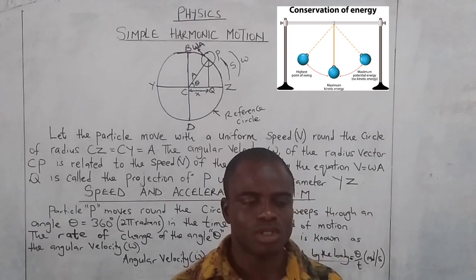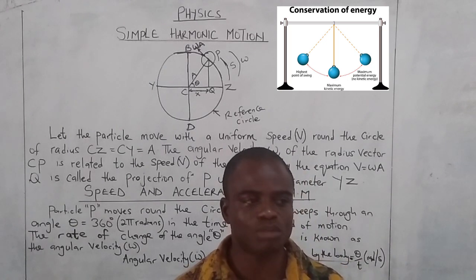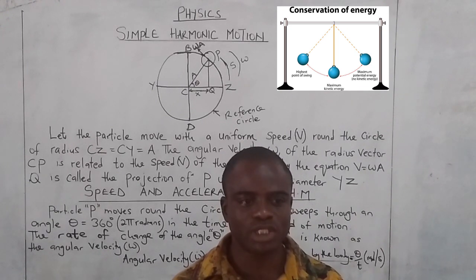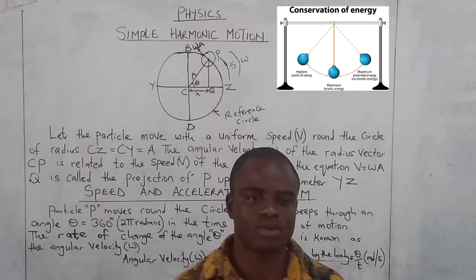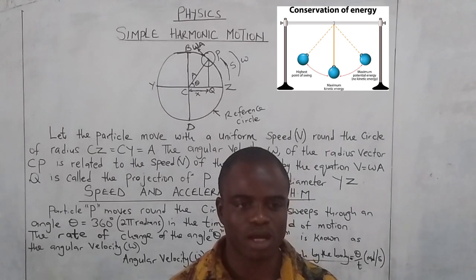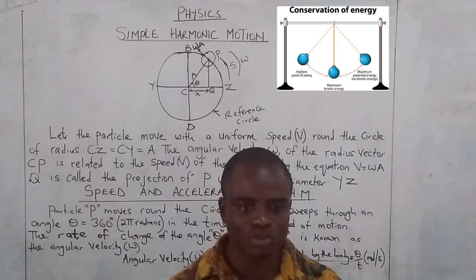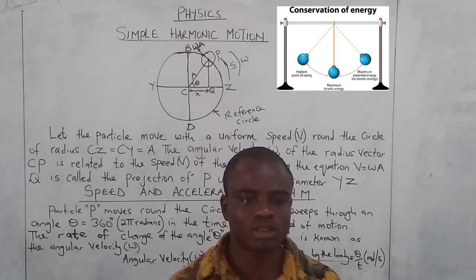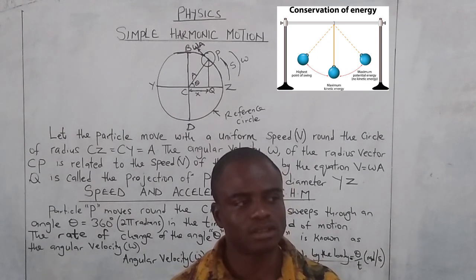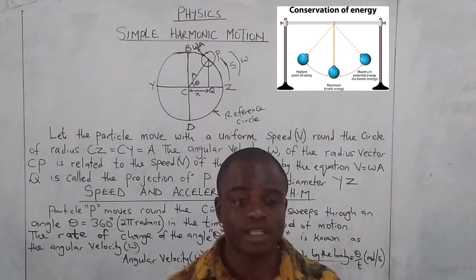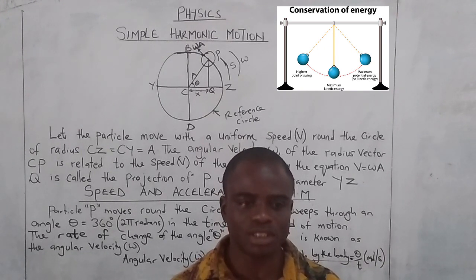Good students, the topic we are considering today is simple harmonic motion. It talks about objects moving around a circle at a particular angle, and the angle at which it is being moved is equivalent to theta, and equals 2 pi radians, and in degrees is 360 degrees.